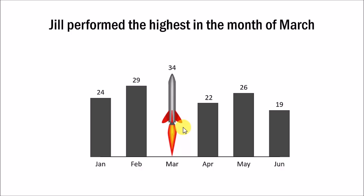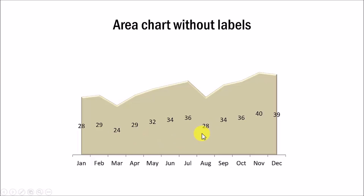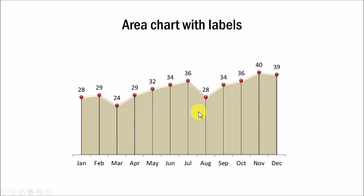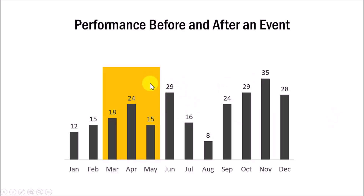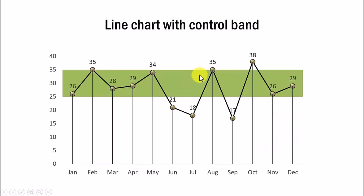Making a chart memorable involves overcoming some of the inherent limitations imposed by PowerPoint. For example, when you try to add data labels to your area charts, you end up getting a mess — there is no option to add data labels at the top. In the program, I'll show you how to overcome this limitation by using the power of combination charts. I even show you how to highlight certain columns in a chart so you can easily compare the performance before and after an event. I also teach you how to create a control band to add context to your performance numbers — this allows you to quickly see values going above or below the desired range.